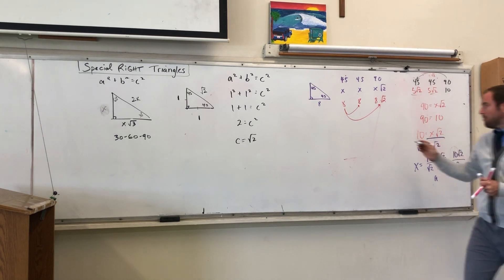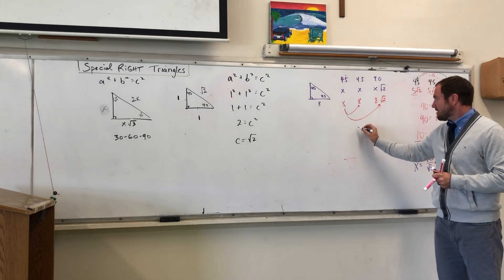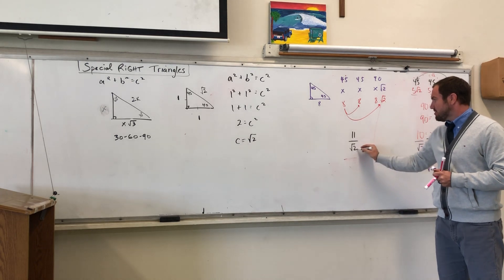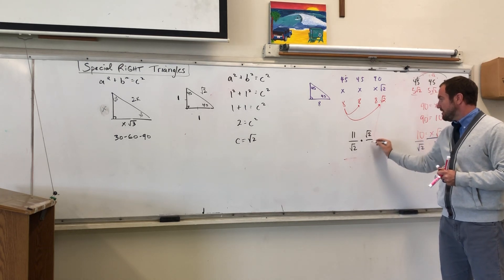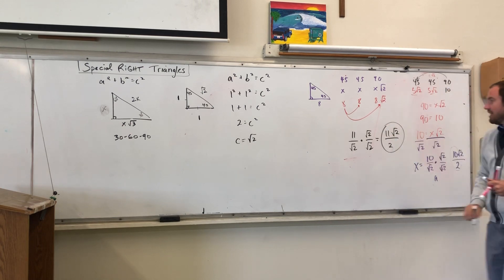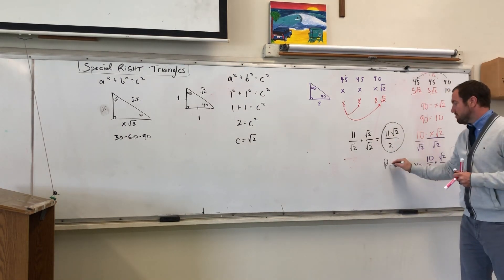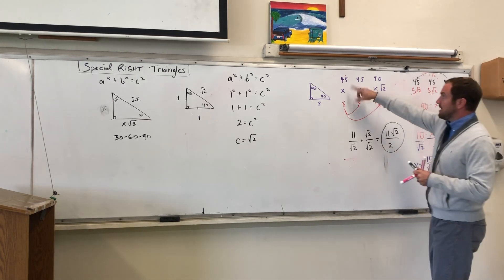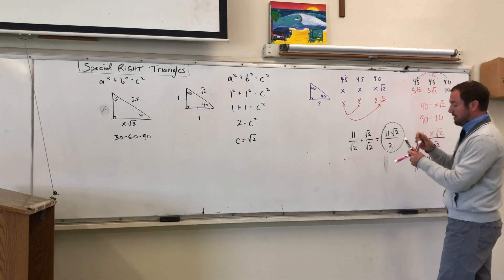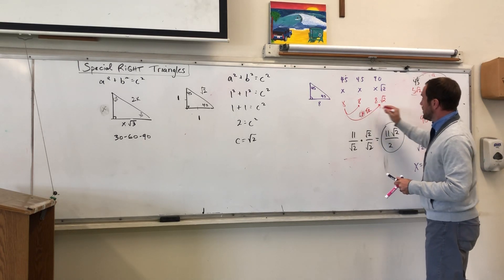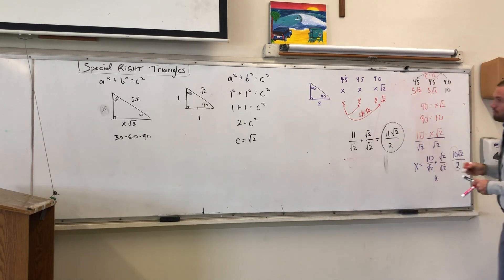If your side opposite 90 is 11, you'd get 11√2 over 2 — and it can't always be reduced; it's not always going to simplify further. So for the 45-45-90: to go forward from 45 to 90, multiply by √2. To go backwards from 90 to 45, divide by √2.